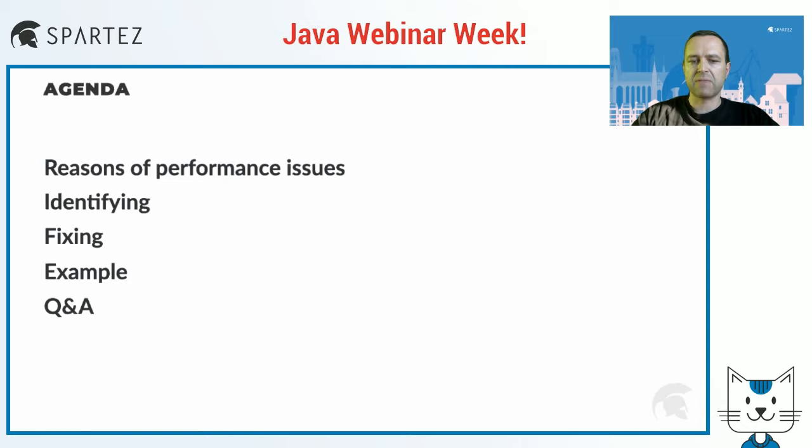After that, we will go through real-life examples of performance improvement. The presentation will last for about 20–25 minutes. After that, we will have a Q&A session. Let's start.